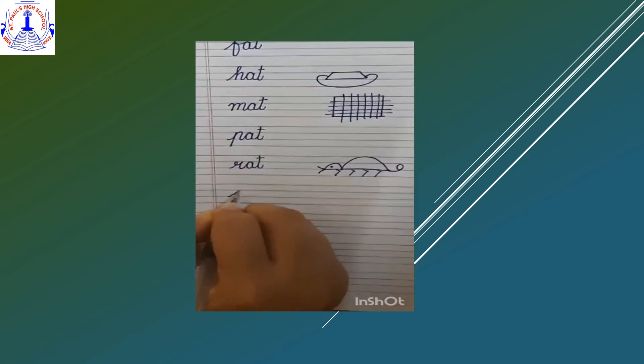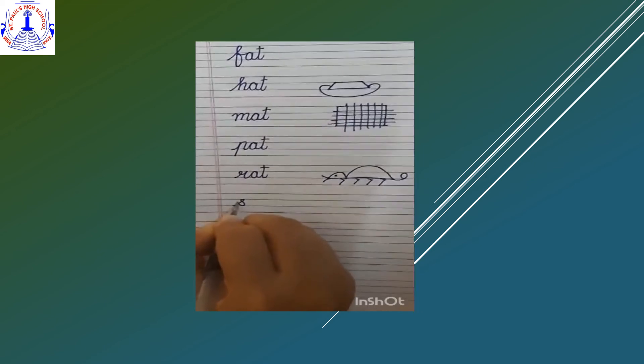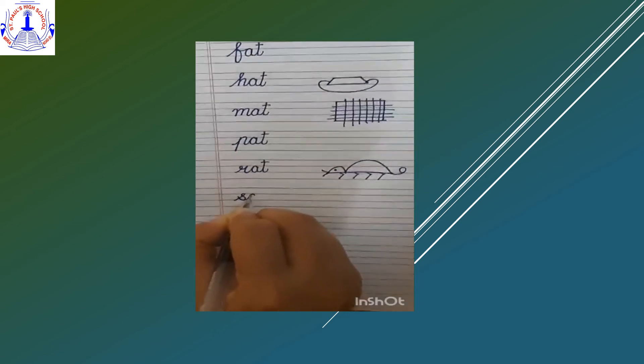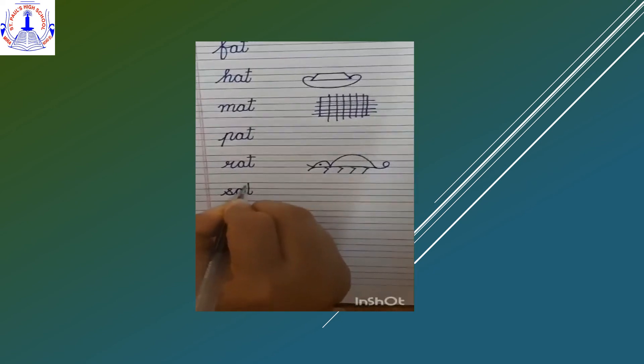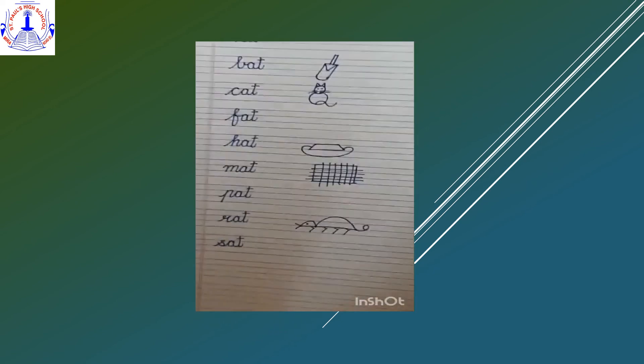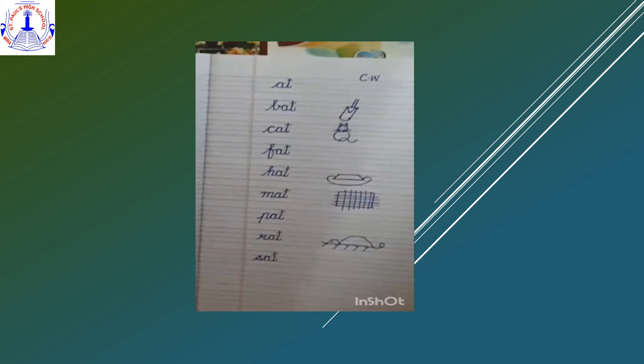Now move to the next line and write S-A-T, sat. Small cursive S joining with A joining with T. S-A-T, sat.